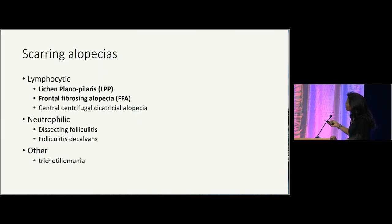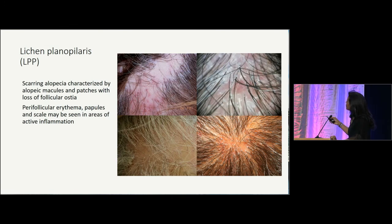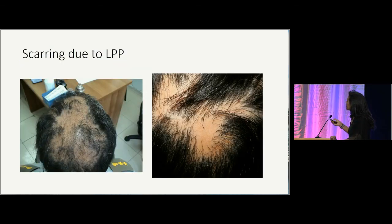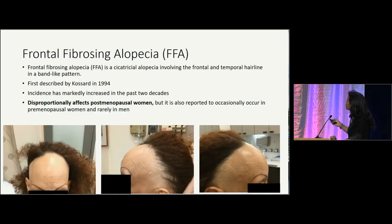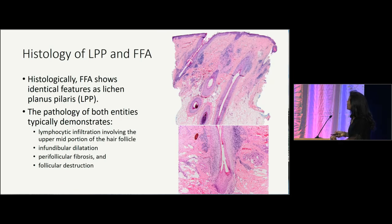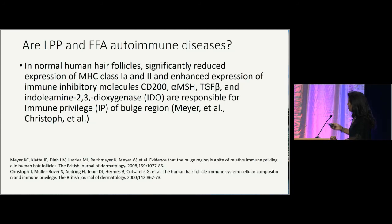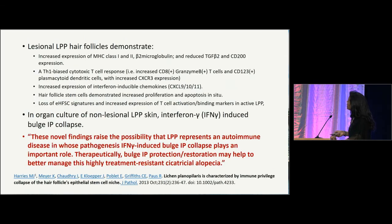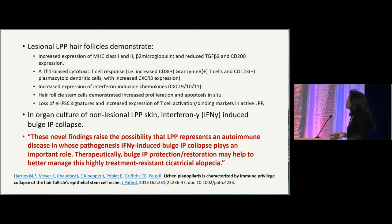Moving on to scarring alopecias: lichen planopilaris shows lots of inflammation and perifollicular scale, resulting in permanent hair loss and loss of follicular ostia. Frontal fibrosing alopecia is believed to be a related clinical variant, with similar perifollicular inflammation and identical biopsies showing a lymphocytic infiltrate involving the upper to mid portion of the hair follicle. Multiple studies indicate a loss of immune privilege at the bulge region in lichen planopilaris, which can be induced by treating cells with interferon gamma — raising the possibility that these may also be autoimmune diseases and therefore potentially treatable with Janus kinase inhibitors.